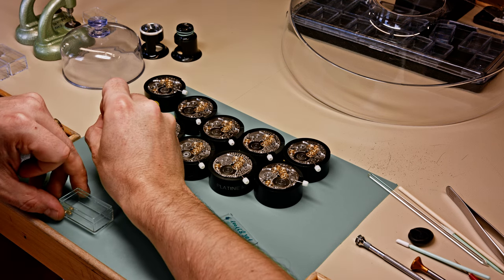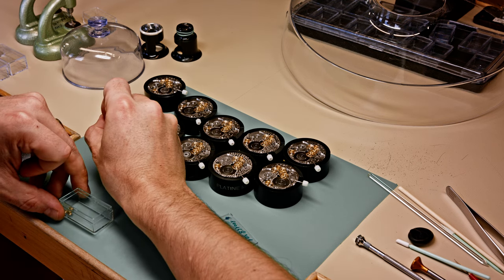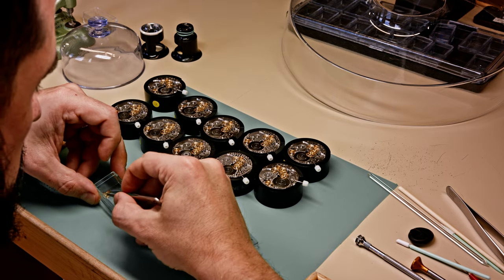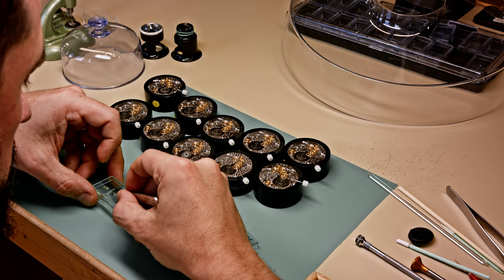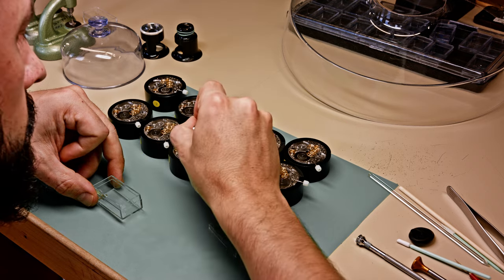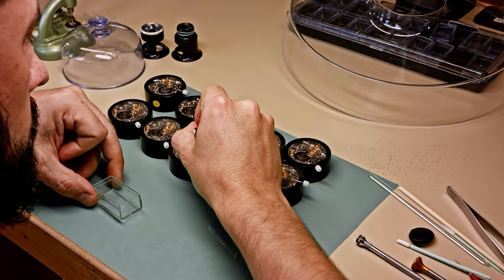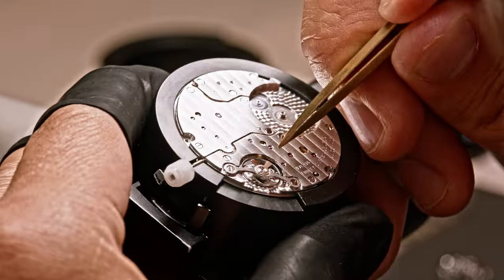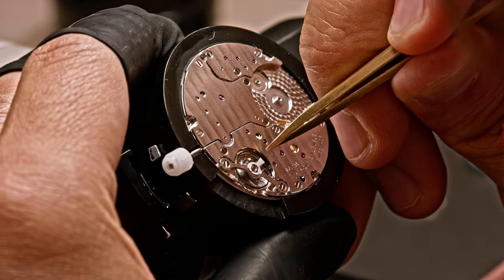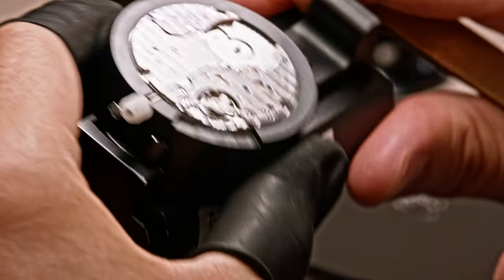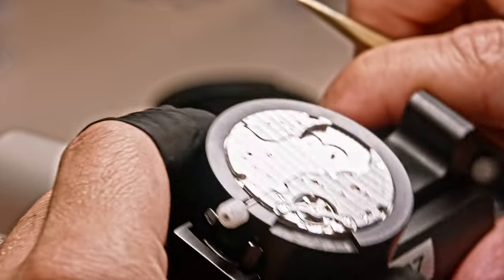You see he is putting parts of the gear train in there. Things we saw this morning being manufactured after they have been decorated, washed, everything is ready. So they come and then part by part, the movement is assembled. And once it is fully assembled, the colleague, we will film him just in a few seconds, will then do the necessary regulations of these calibers.